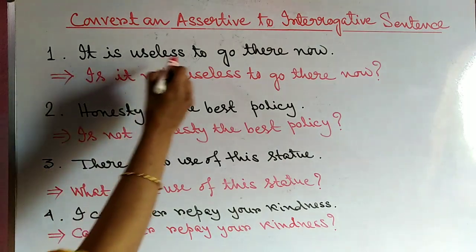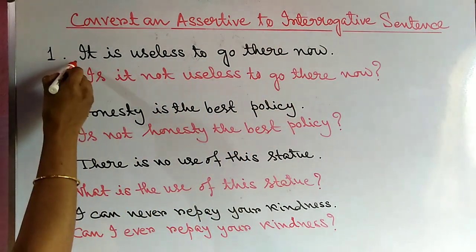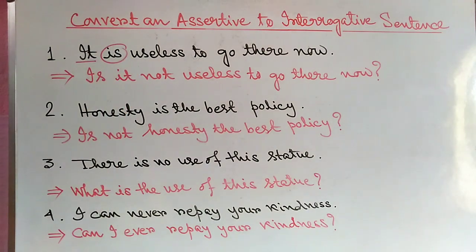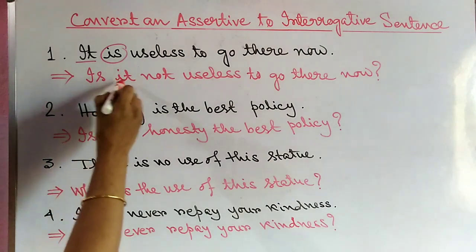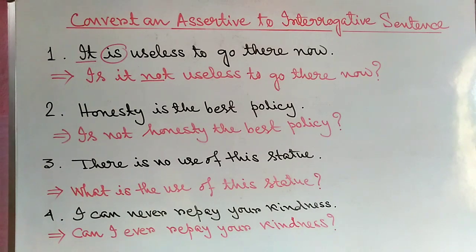Example: 'It is useless to go there.' When we convert this to interrogative, 'is' is the helping verb, which comes first. Since the assertive sentence is affirmative, the interrogative must be negative. So we use 'not': 'Is it not useless to go there?'